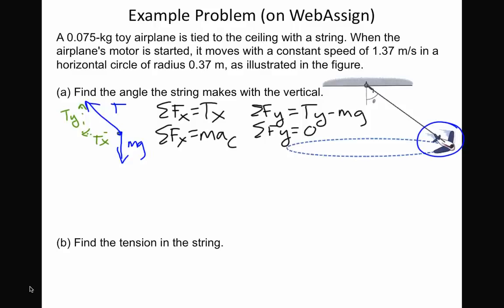We know that it's only accelerating in the x direction. So that's where our centripetal acceleration is occurring. And in the y direction, it's not accelerating. So we can set these things equal to each other. Tx equals mass times acceleration. Ty minus mg equals zero. We're going to need to do both of these because the angle theta is up here, and we're going to have to use an inverse tangent. So we've got to do both the x and y problems.